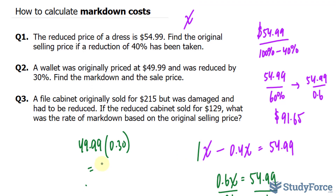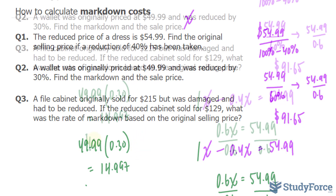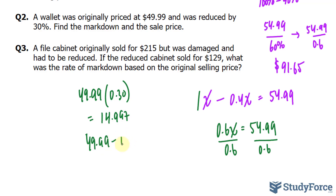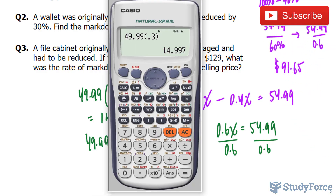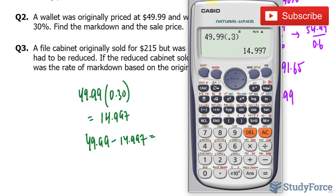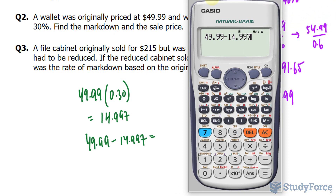$49.99 times 0.3 gives us $14.997. That represents the markdown cost, and the sale price will be the original minus the markdown. So $49.99 minus $14.997 gives us the sale price, which is $34.99.